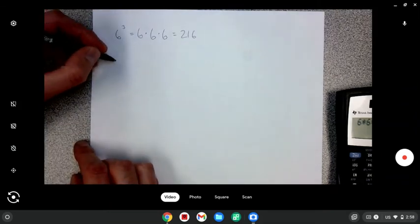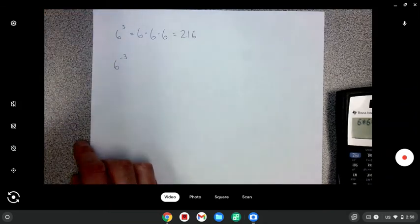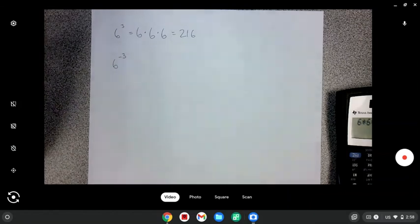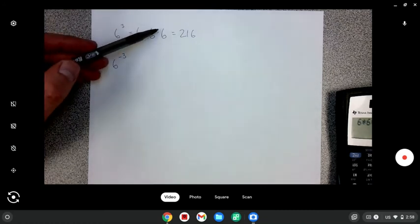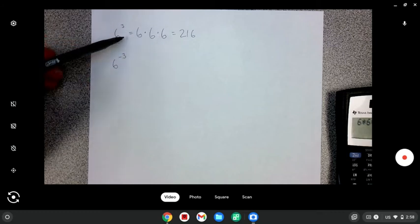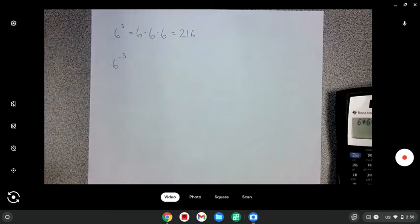Using that same logic, six to the negative three would say that we're going to do six times itself negative three times. And that doesn't make sense. We can't use the same logic that we used here on a negative exponent. It falls apart.